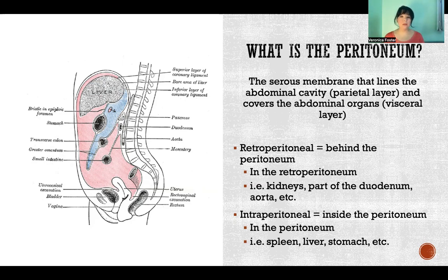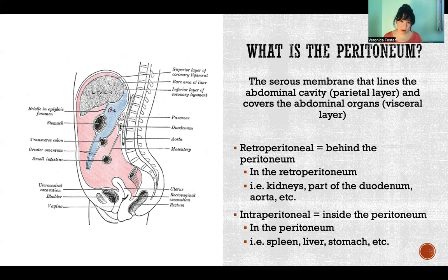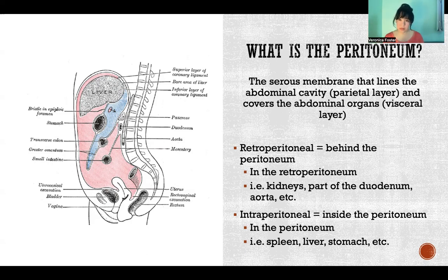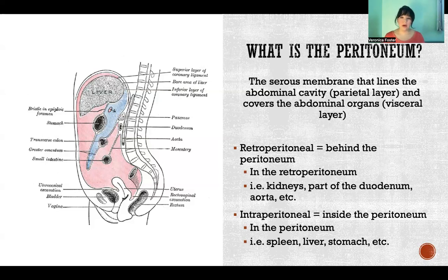Retroperitoneal refers to anything that is behind the peritoneum — not contained within the peritoneum. Those organs might be completely outside of the peritoneum, or they might be partially covered by the visceral layer of the peritoneum and partially not. For example, the duodenum, the first segment of the small intestine, on one side is facing into the peritoneum and is covered by the visceral layer, but on the posterior side it faces the retroperitoneum — the space behind the peritoneum. The kidneys are also retroperitoneal.